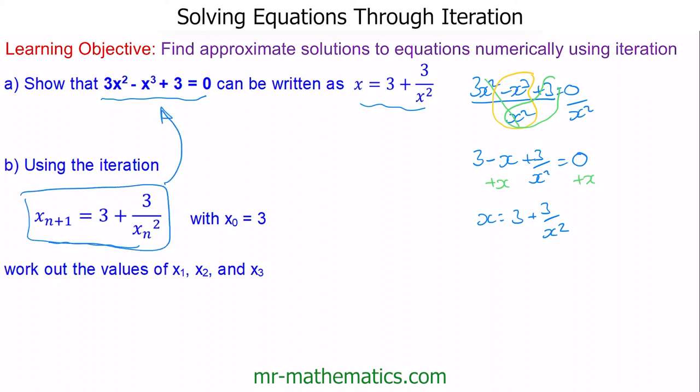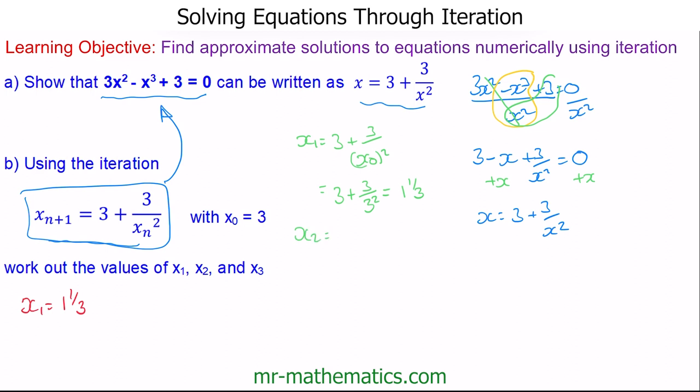We can work out x₁ by substituting in x₀ = 3: 3 + 3/x₀² gives us 3 + 3/9 = 3 and 1/3. To work out x₂, I'll use the answer function: 3 + 3/(previous answer)², which gives us 3.27. Pressing equals again gives the third iteration: x₃ = 3.281.